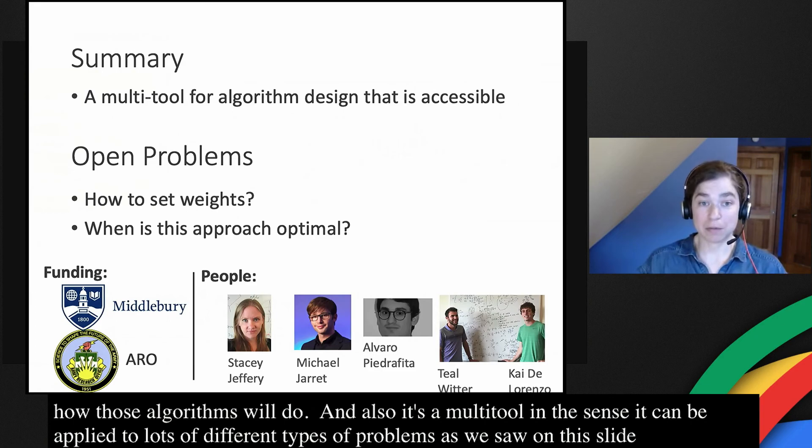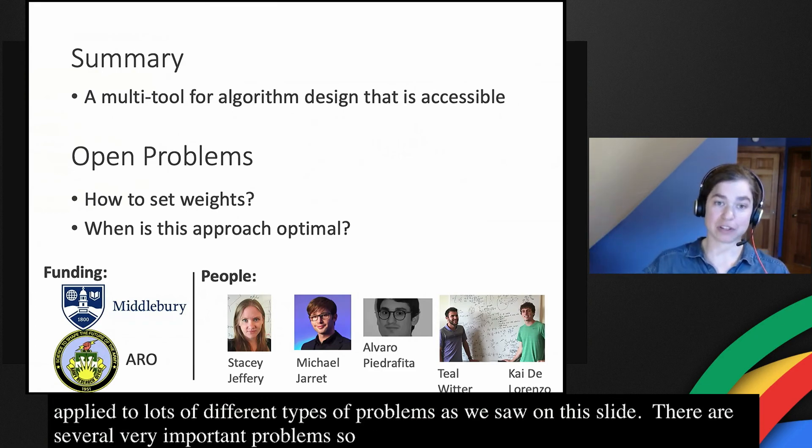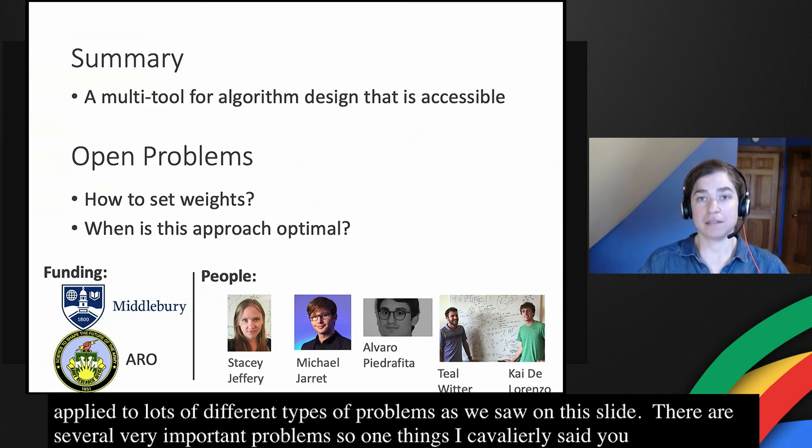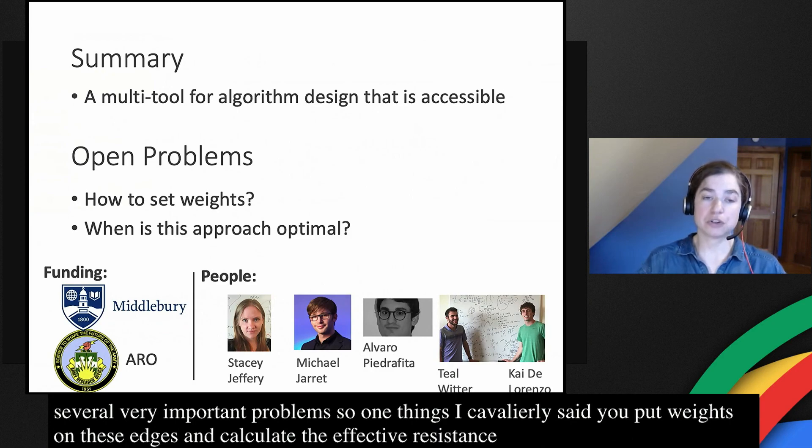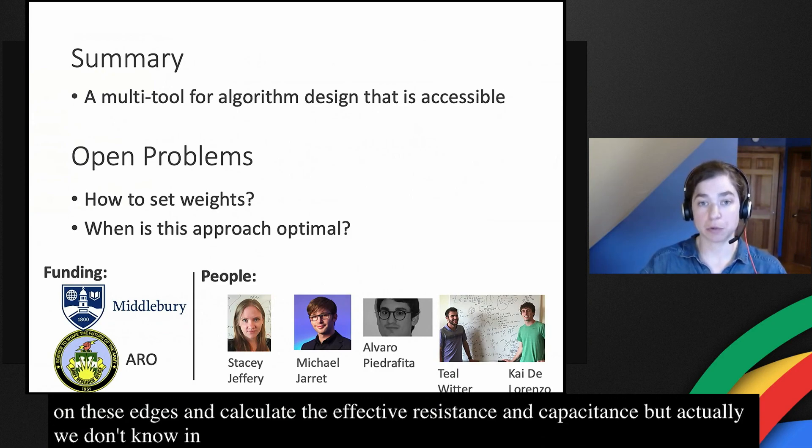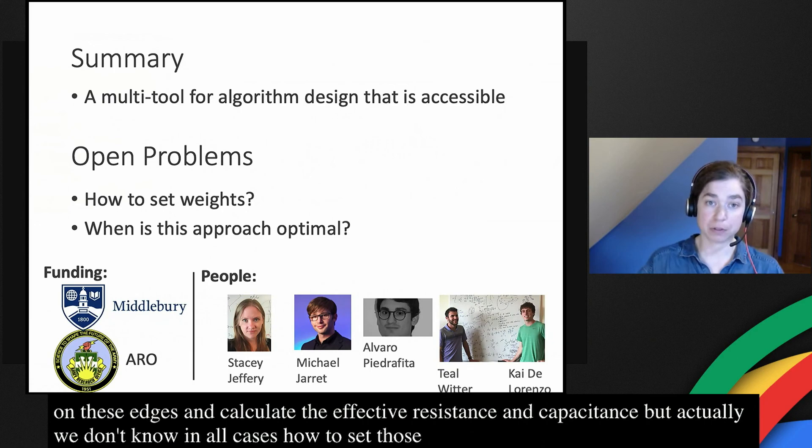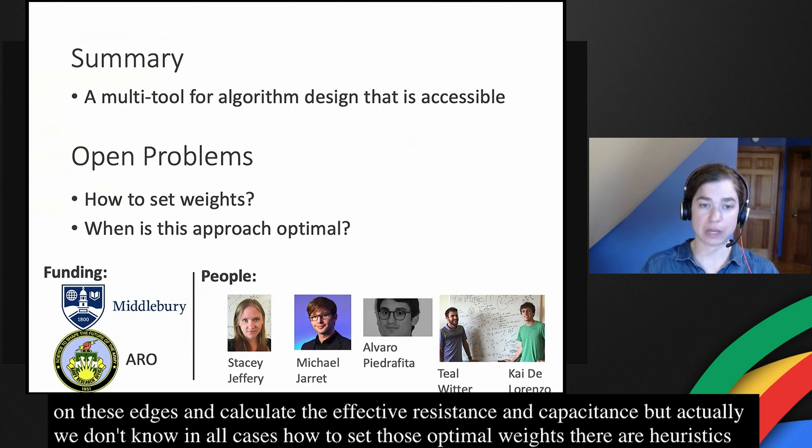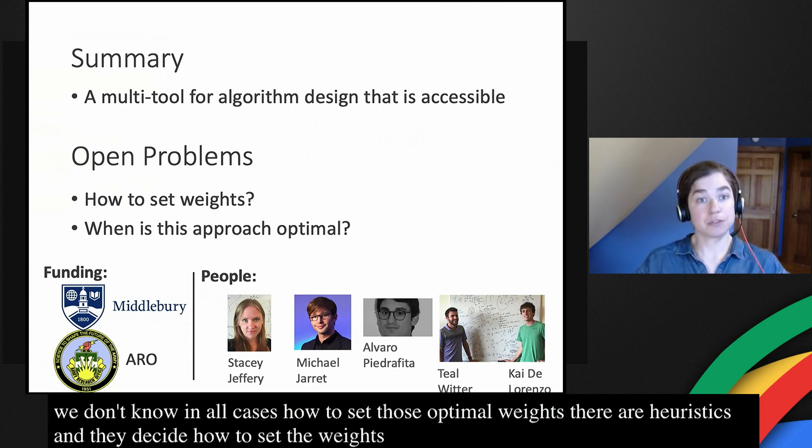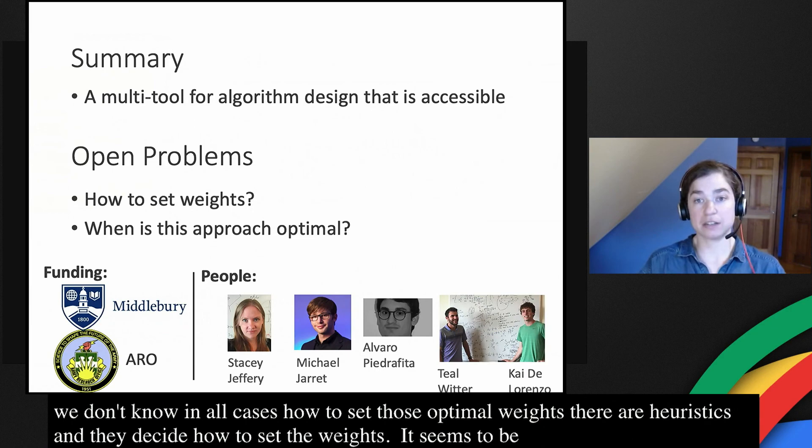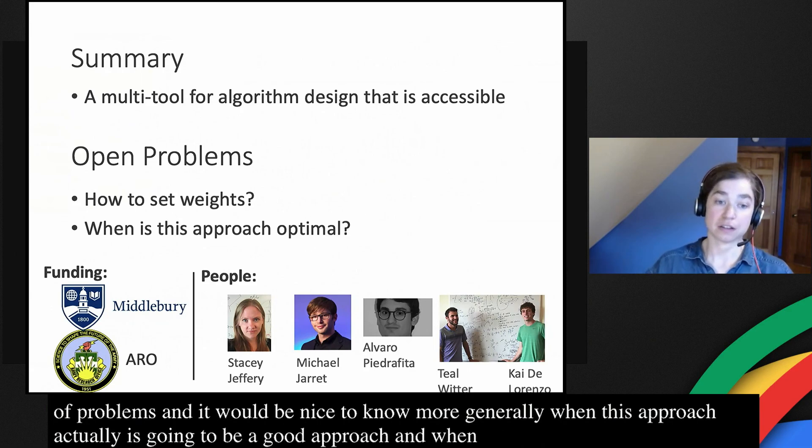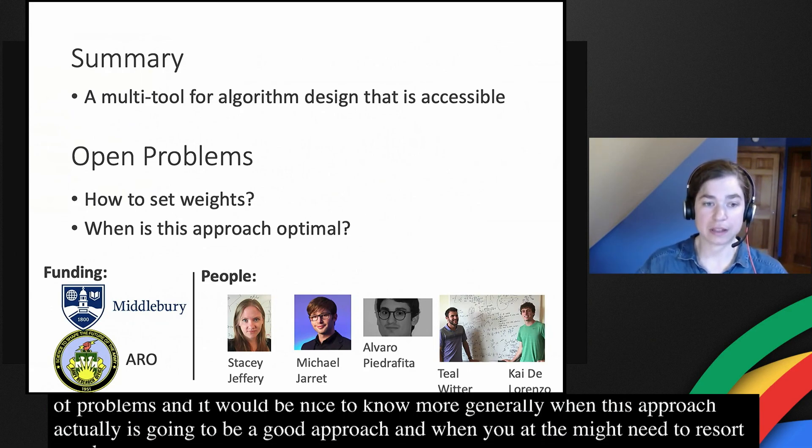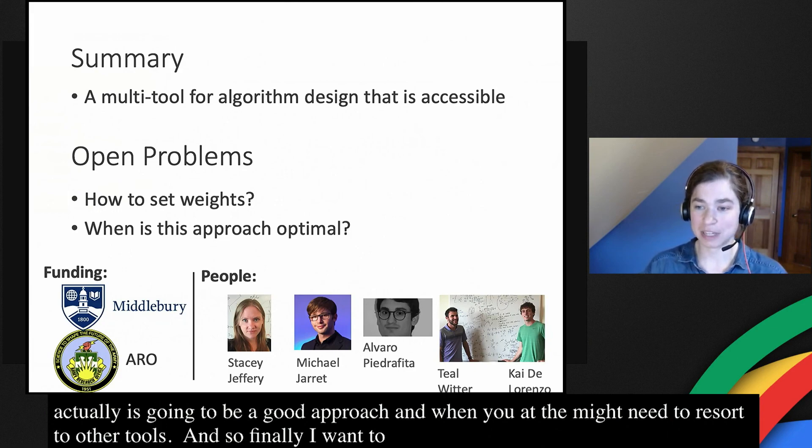There are several very important open problems. One thing that I just kind of cavalierly said was, you just put weights on these edges and calculate the effective resistance and effective capacitance, but actually we don't know in all cases how to set those optimal weights. There are heuristics that people use, and that's how most of those results came about through using heuristics for deciding how to set the weights. Also we saw that it seems to be optimal for a lot of types of problems and it'd be nice to know more generally when this approach actually is going to be a good approach and when you might need to resort to other tools. And so finally I just want to thank my funding sources and some of my collaborators.